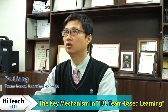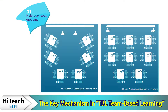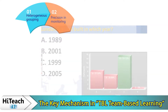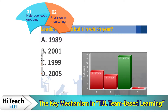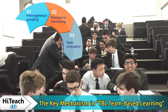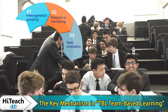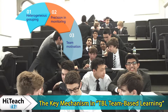Team-based learning has the following key mechanisms. Number one: heterogeneous grouping — balance group cooperative resources and create mutual aid opportunities. Number two: precision in monitoring — understand the level of individuals, groups, and the entire class. Number three: team motivation — inspections and sampling questions by teachers to promote group discussions and learning.